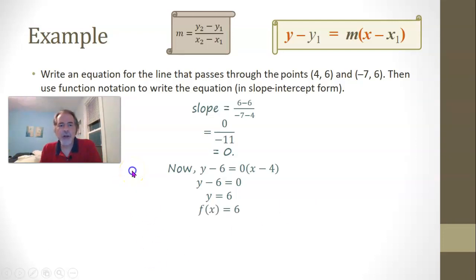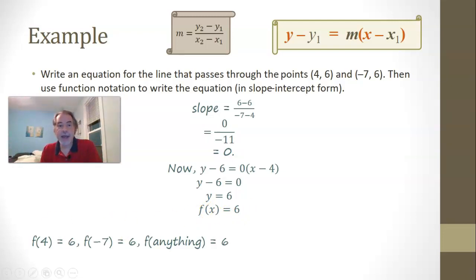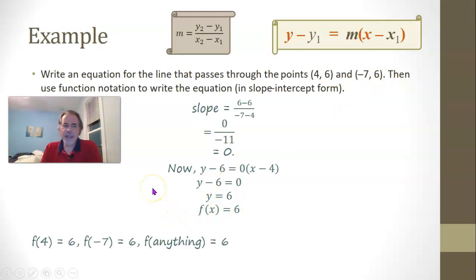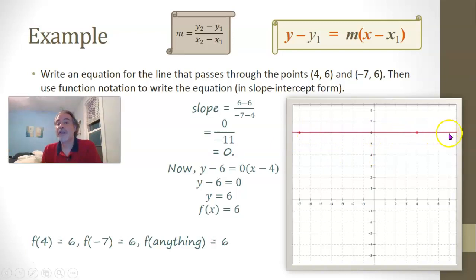What's going on here? This is a function where no matter what we put in for x, we always get the same thing out: 6. f of 4 is 6, f of negative 7 is 6, f of anything is 6. Graphically, the line through those two points is just a horizontal line — it goes straight across, and every point on this line has a y-coordinate of 6.